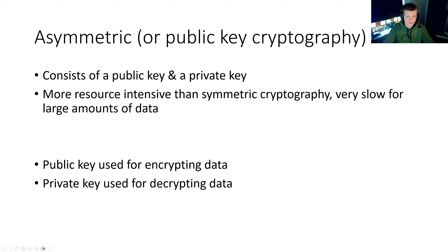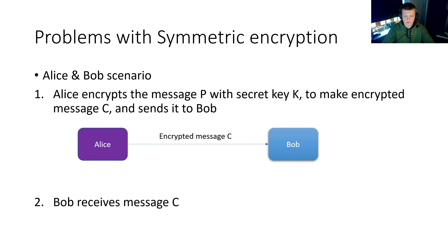The public key is used for encrypting data and the private key is used for decrypting data. Using a combination of symmetric and asymmetric cryptography together, we can fix the issue we had with symmetric encryption. To reiterate the problem: when Alice encrypts a message P with a secret key K — the shared key that Bob and Alice both know — and sends it, Bob needs the secret key K to decrypt the message. If Alice sends it across the network with the secret key K, an adversary sniffing the communications would also see that key. We need to find a way to keep this secret key secure while it's being sent over the network.